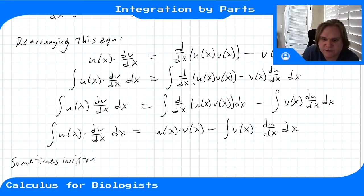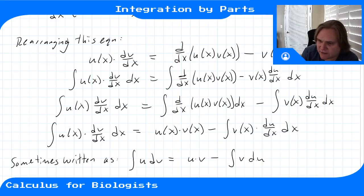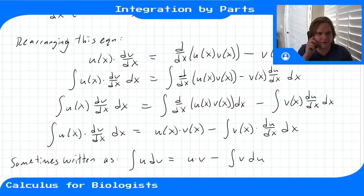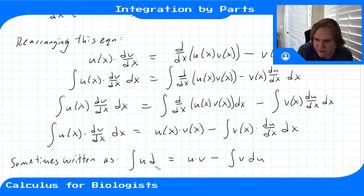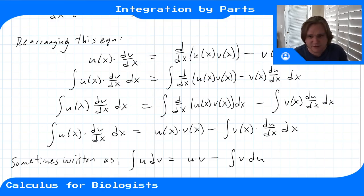Sometimes this is written in shorthand by removing the dx's and multiplying through, so it becomes: integral of u·dv equals u·v minus integral of v·du. That's how it's presented in a lot of calculus classes, though I think it's clearer with the full derivatives written out.